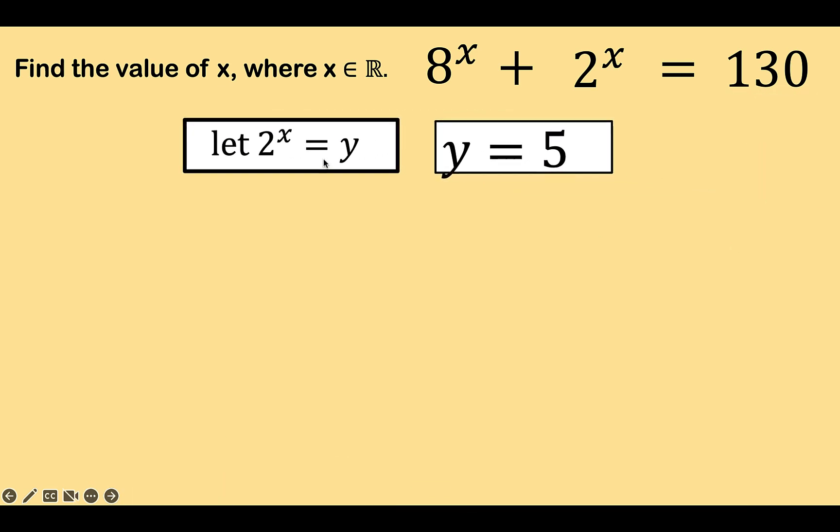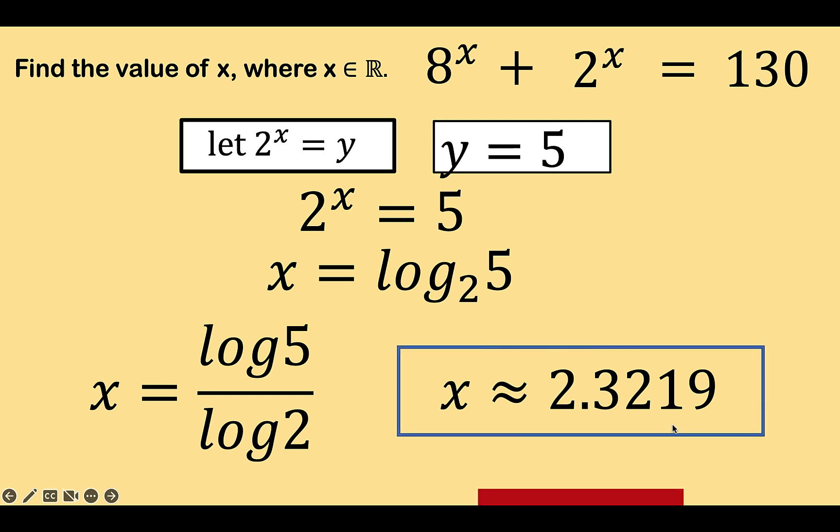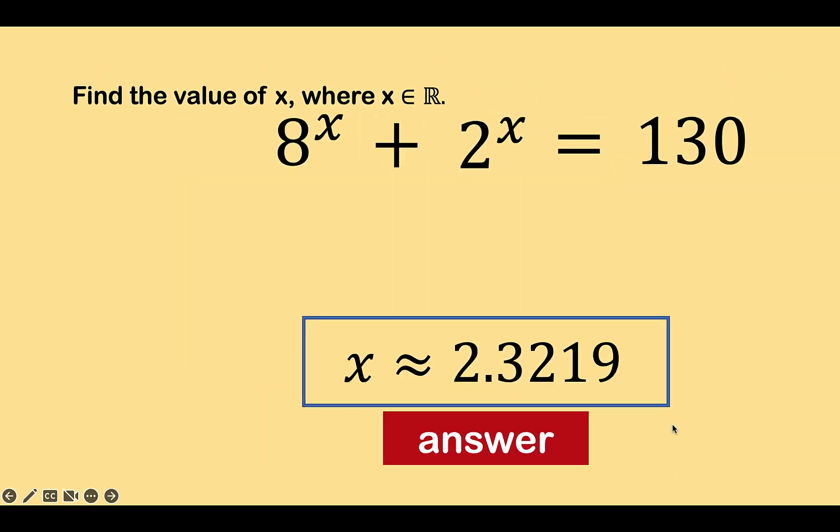We have 2 raised to x equals y and y is equal to 5. So, by transitive property, we now have 2 raised to x is equal to 5. Again, we are solving for the exponents so we can use logarithm. So, x is equal to the logarithm of 5 to the base 2. And by using the change of base property of logarithm, we now have x equals the common logarithm of 5 over the common logarithm of 2, which is approximately equal to 2.3219. So, this is now the value of x in this equation.